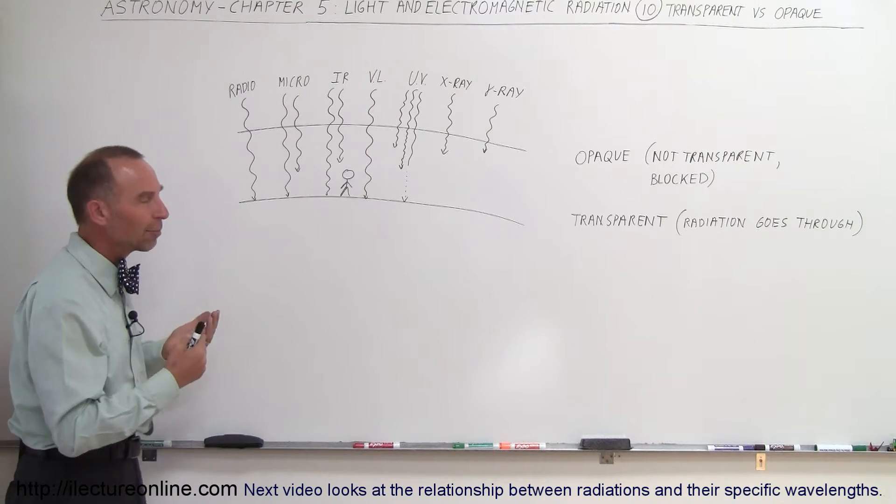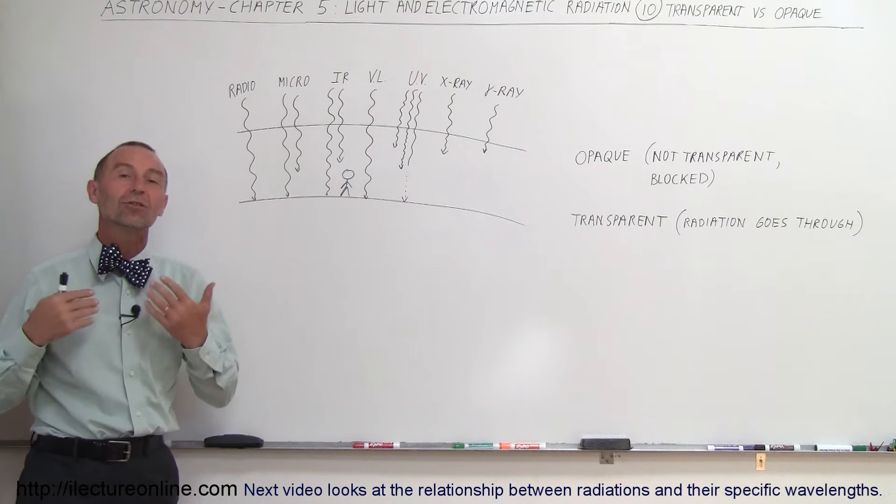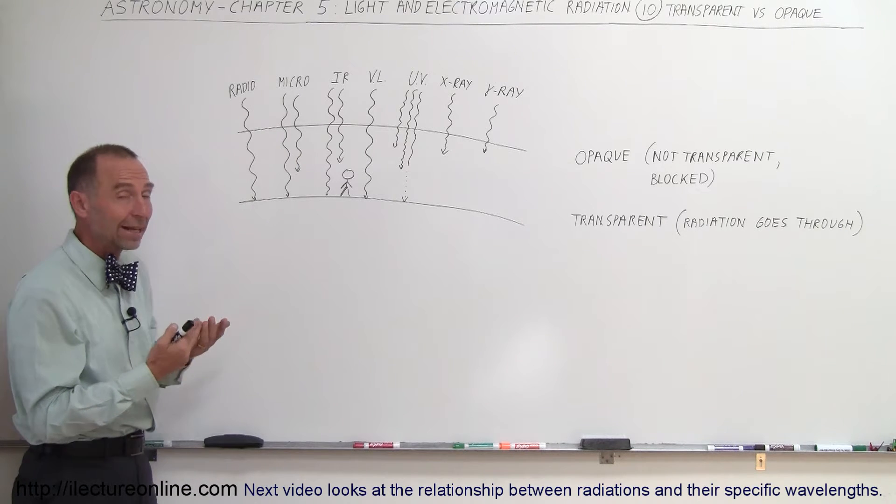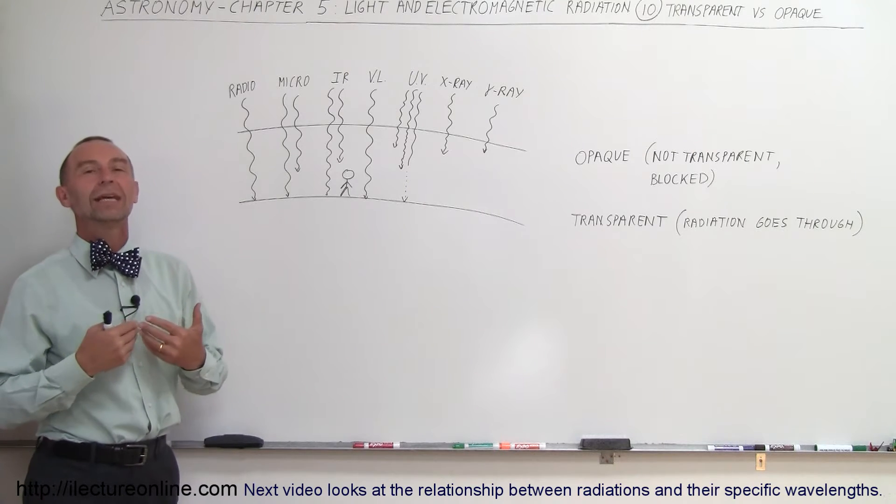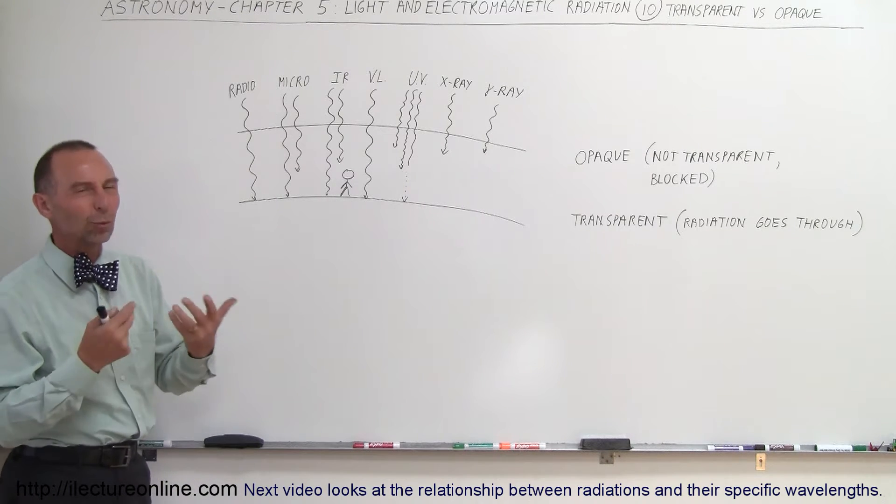So which radiation makes it through the atmosphere, which radiation does not? So in other words, which radiation, for which radiation is the atmosphere transparent and for which radiation is the atmosphere opaque? That's the way we say it.